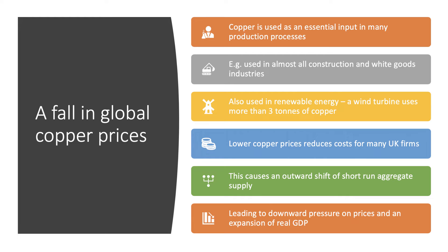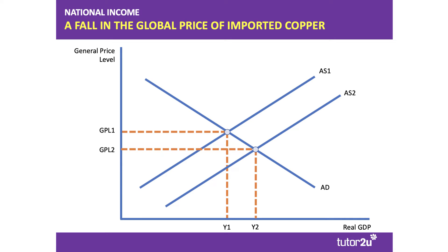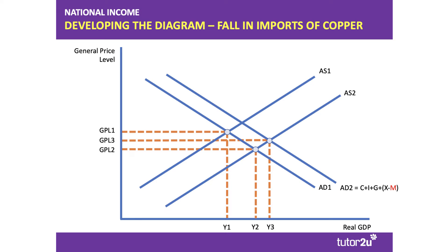The outward shift of aggregate supply leads to downward pressure on prices and an expansion of real GDP — shown as AS1 shifting to AS2, moving us to a higher level of output and lower prices. You can develop the analysis further: since we import most of the copper we use, if the price falls, we may spend less on copper imports — depending on elasticity of demand — and since AD equals C plus I plus G plus X minus M, a fall in M effectively increases aggregate demand. So consider the trade balance effect of a fall in the copper price.